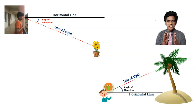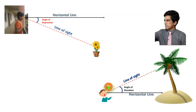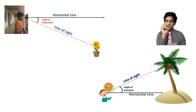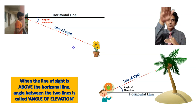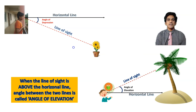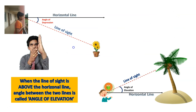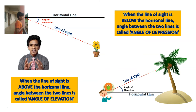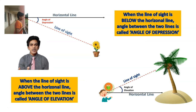To summarize: the imaginary line connecting the object to your eye is the line of sight. You also imagine a horizontal line at your eye level. When the line of sight is above the horizontal, that angle is called the angle of elevation. When the line of sight is downward from the horizontal, that angle is called the angle of depression.